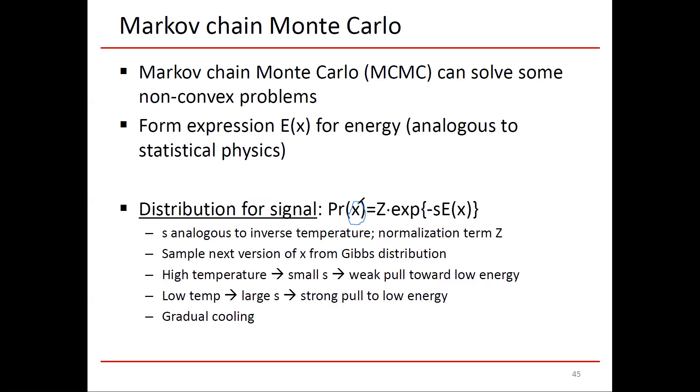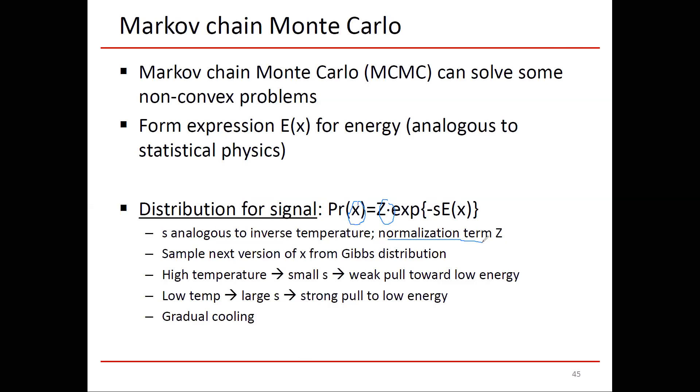In statistical physics, large-scale systems tend over time to go to good low-energy solutions, but sometimes not. MCMC is probabilistic in nature. We have a distribution for the signal X: the probability of X is Z times the exponent of minus S times E of X. Z is a normalization term that makes sure the probabilities over all the X's sum or integrate to one, making it an appropriate probability distribution function.